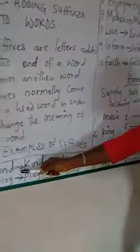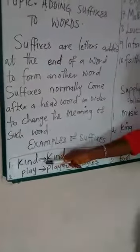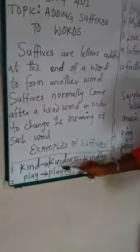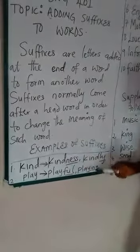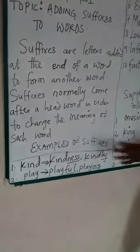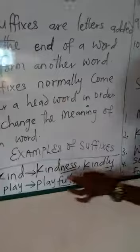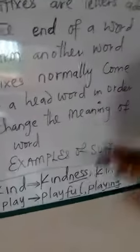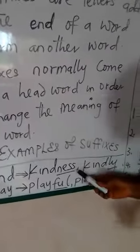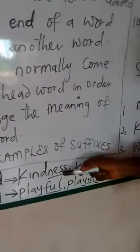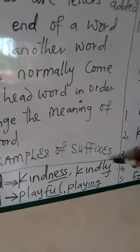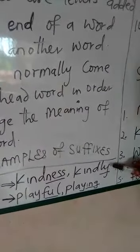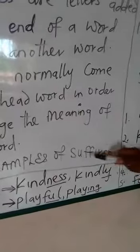We have some examples of suffixes. This is 'kind', and 'kind' is functioning as the head word. Then we go over to the letters: 'kindness' and 'kindly'. If you look at these words, I underline some letters. In 'kindness', the underlined letters are N-E-S-S — that is an example of a suffix. In 'kindly', the underlined letters are L-Y — that is also an example of a suffix.